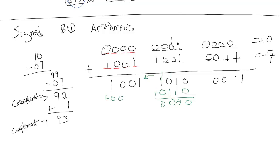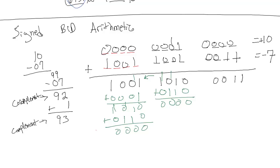We add the carry of 1 to the next field, giving 0101 (binary). That result is also invalid in BCD, so we add 6 again. Adding 0110 produces another carry bit at the top, which — like in 2's complement — we discard.